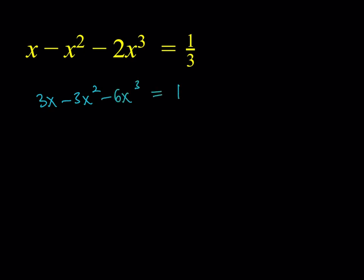It's going to give us 3x minus 3x squared minus 6x cubed equals 1. Great. Now I can just go ahead and put everything on the same side. So if I do, it's going to look like 6x cubed plus 3x squared minus 3x plus 1 is equal to 0.